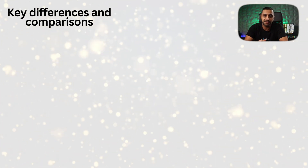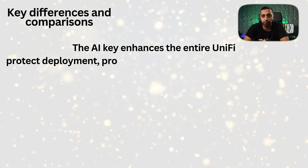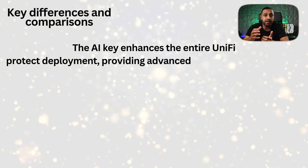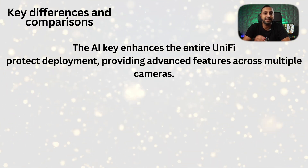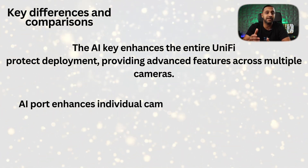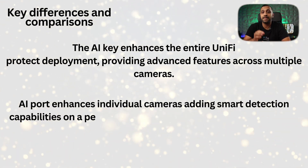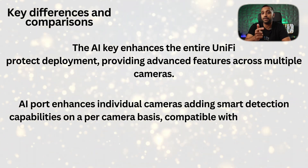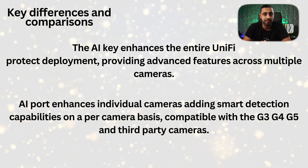The AI Key enhances the entire Unifi Protect deployment, providing advanced features across multiple cameras, whereas the AI Port enhances individual cameras, adding smart detection capabilities on a per-camera basis. The AI Port is compatible with G3, G4, G5, and third-party cameras. Currently it is a one-to-one mapping, so keep that in mind.